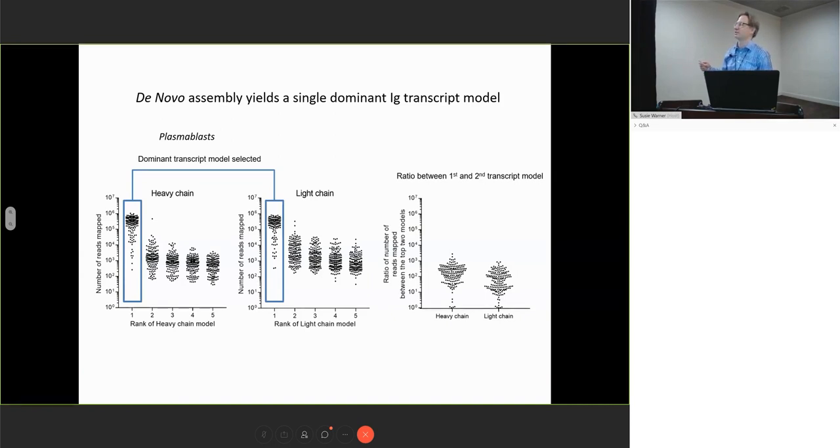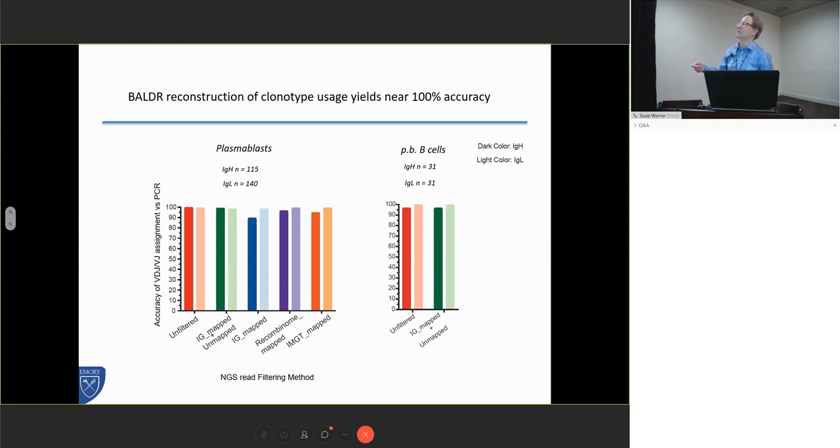When we do have less distinction, these end up being nearly identical sequences anyways. The punchline is that if we use our defining criteria as getting the correct VDJ assignment or VJ assignment to call a phenotype in heavy and light chains, our assay is pretty much 100% accurate for both plasmablasts and B cells.